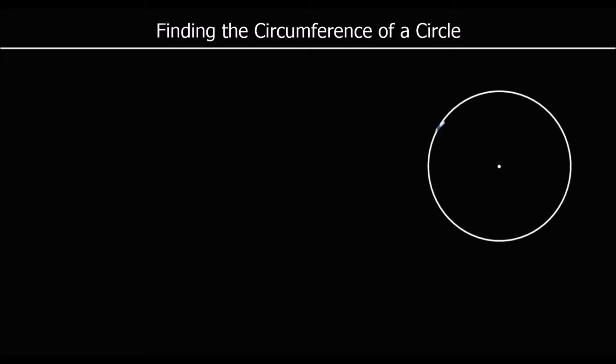The circumference of a circle is the perimeter of the circle. It's the length of the outside of the circle, the length around the circle. That's called the circumference.